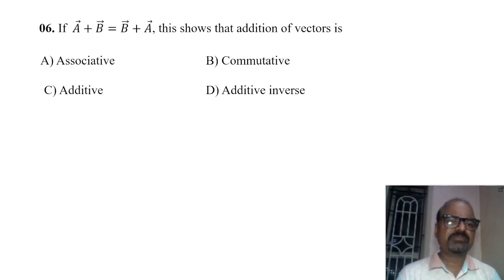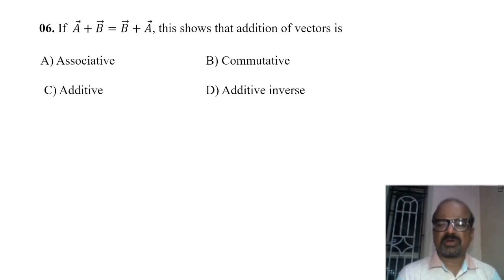Next, if vector A plus B equals vector B plus A, this property is the commutative property.